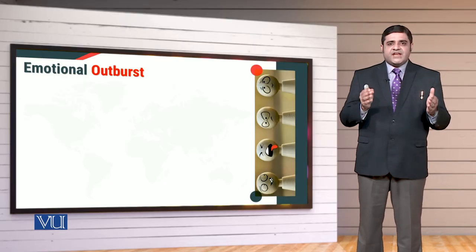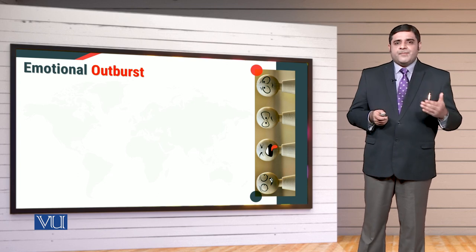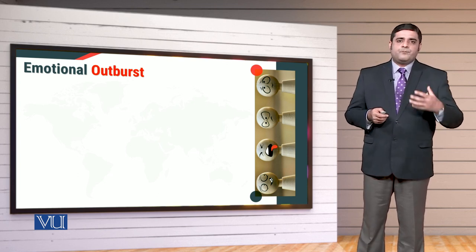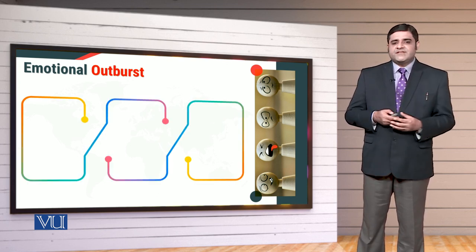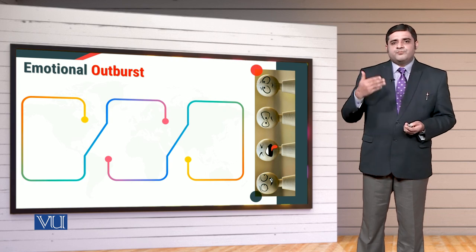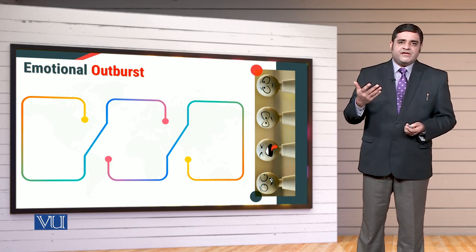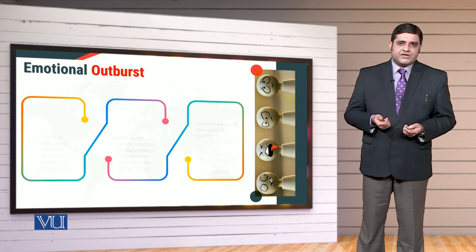Ab is maqsad ke liye yaad rakhiye ga ke hameh at the same time is baat par careful rahna hai ke hemare liye kahan par rationality ki zyada zarurat hai, kahan par association and affiliation wo priority rakhti hai. Is maqsad ke liye hemare emotional outburst wo visualize bhi hone chahiye, analyze bhi hone chahiye, synthesize bhi hone chahiye.